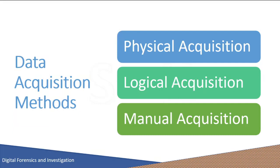Data acquisition is the process of imaging or otherwise extracting information from digital devices, peripheral equipment, and other media. Acquiring data from a mobile phone is not as simple as a standard hard drive forensic acquisition. There are three different types of forensic acquisition methods for mobile phones: physical acquisition, logical acquisition, and manual acquisition. These methods may overlap with the levels discussed in the mobile forensics tool classification system. The amount and type of data that can be collected will vary depending on the type of acquisition method used.